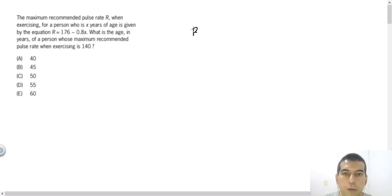So if we have this equation R equals 176 minus 0.8x, in order to solve this one we need to change this pulse rate 140 in the equation. We have 140, switching R here, equals 176 minus 0.8x.